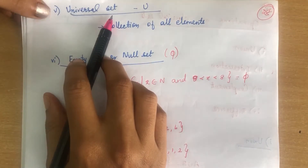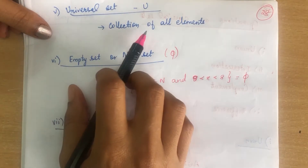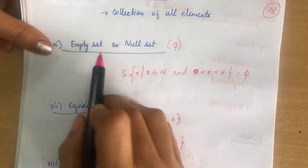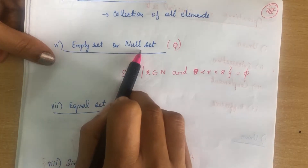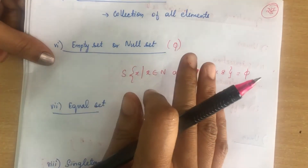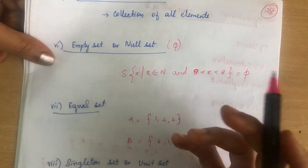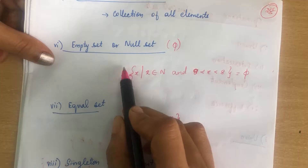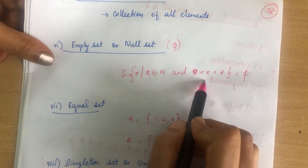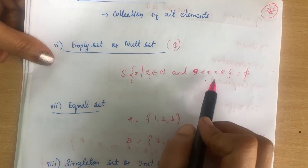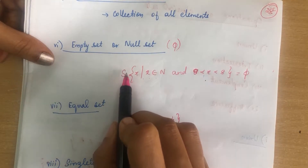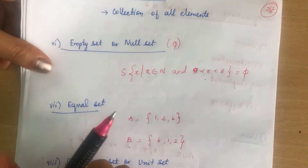The fifth type is universal set — a collection of all elements, represented by U. Next is empty set or null set, represented by the symbol φ (phi). If a set contains no elements, it is called an empty set. For example, {x | x ∈ ℕ, 8 < x < 8} — there is no number between 8 and 8, so the set equals φ. It is an empty set.